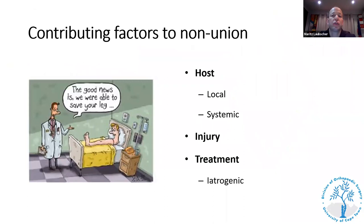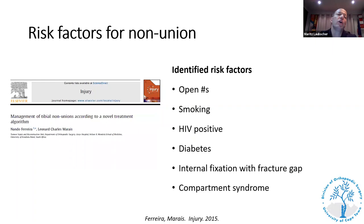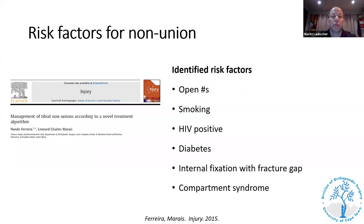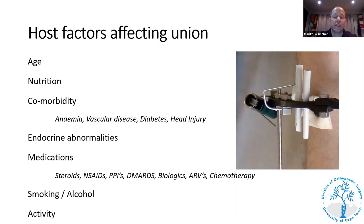What contributes to a non-union? There are host factors — both local and systemic — the injury itself, and often a contribution from the surgery, especially poor surgery. Nandu looked at a series of tibial non-unions and identified certain risk factors: open fractures, smoking, HIV-positive status, diabetes, internal fixation with a fracture gap, and cases of compartment syndrome.